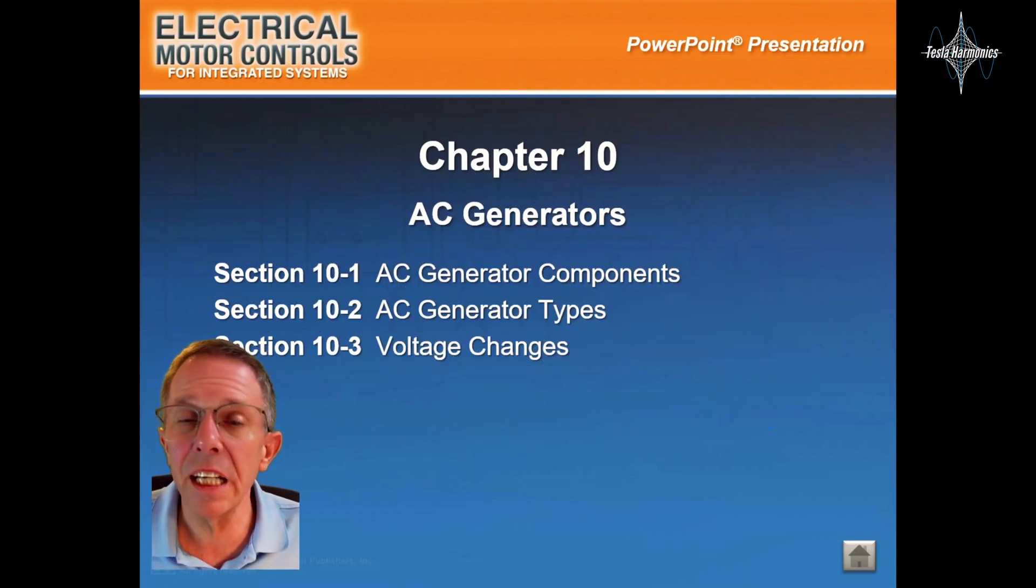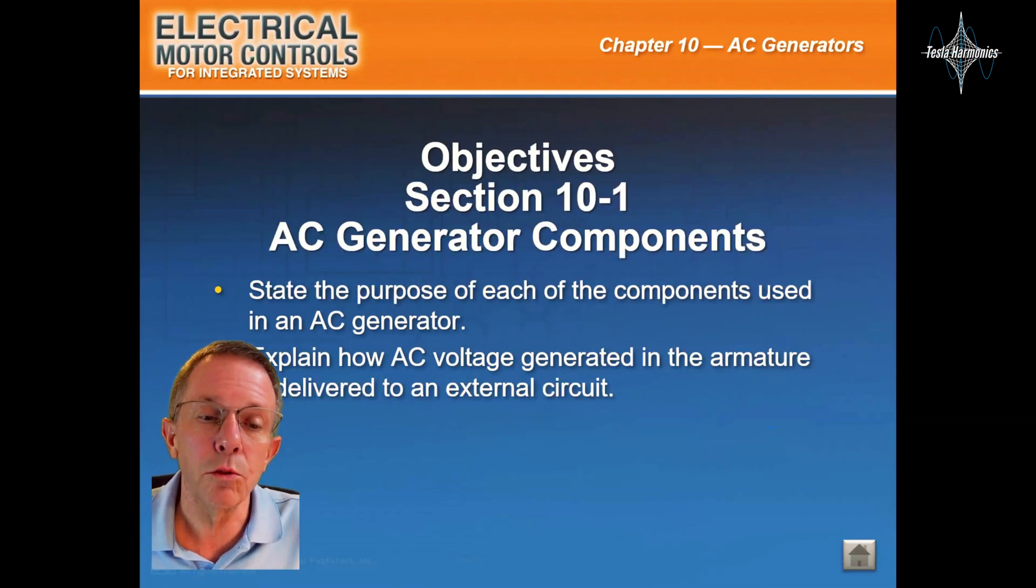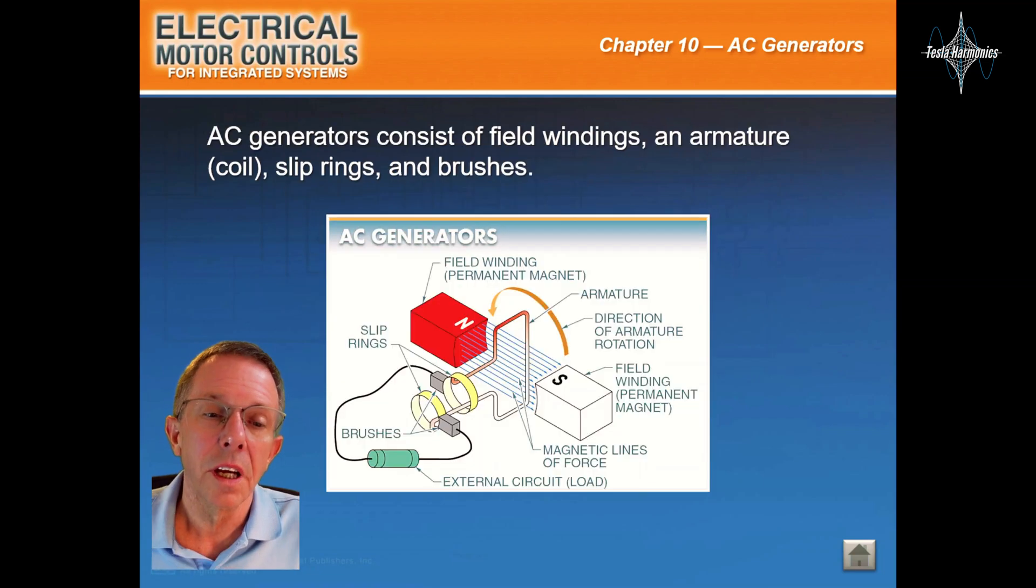Okay everyone, let's take a look at Chapter 10: AC Generators. This will be AC generator components. AC generators consist of field windings, an armature or coil, slip rings, and brushes.